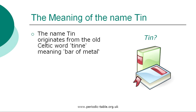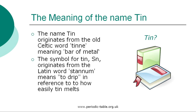An important ore of tin is tin oxide, called cassiterite. The symbol for tin, SN, originates from the Latin word 'stanum', meaning to drip, in reference to how easily tin melts.